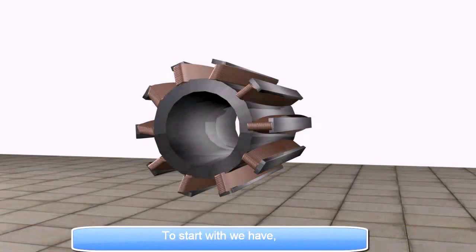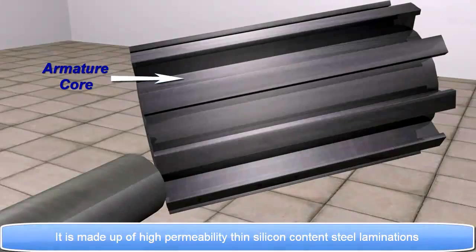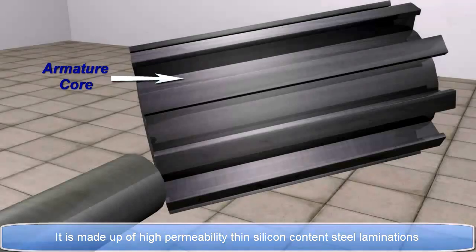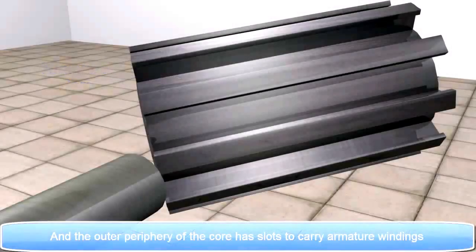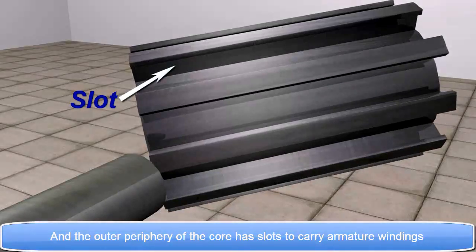To start with, we have Armature Core. It is made up of high-permeability thin-silicon-content steel laminations. And the outer periphery of the core has slots to carry armature windings.